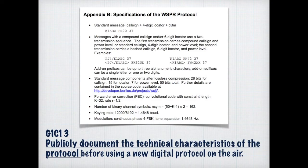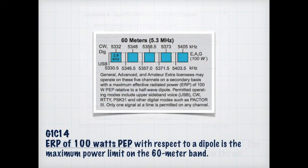One of the neat things about being an amateur radio operator is that you're able to be creative. Suppose you come up with a new type of protocol for data transmission — that's fine, you can do that. But you have to publicly publish the protocol before you can use it on the air. Because 60-meter is a special band with five channels, the effective radiated power of 100 watts peak envelope power with respect to the dipole is the maximum power we can use on the 60-meter band.